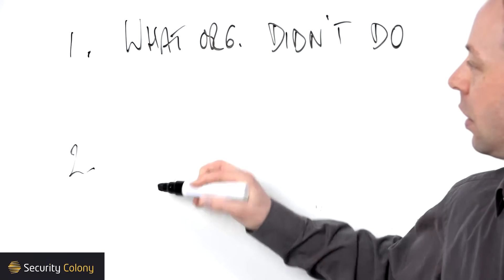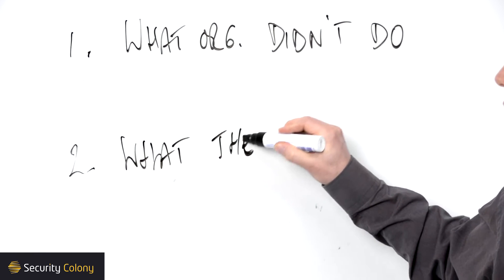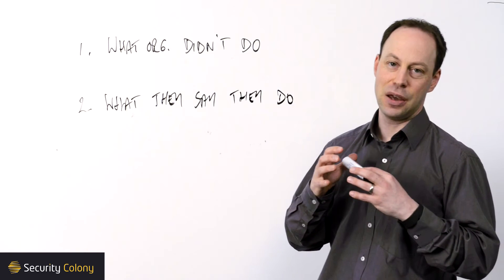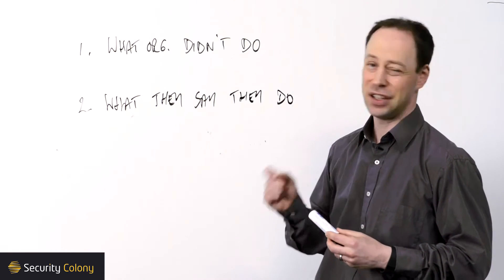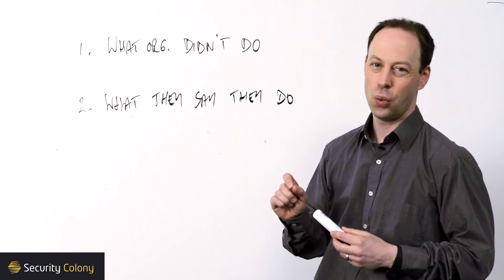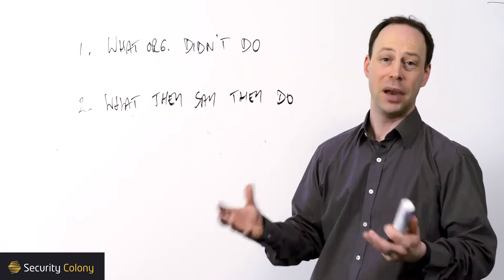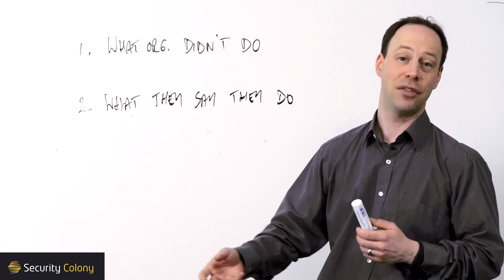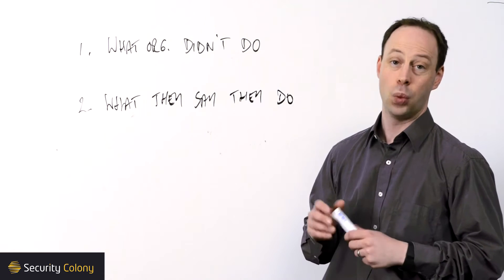The second is looking at what organizations say they do. The idea here is that if across the industry, every organization says that they have a particular control in place, whether or not that's actually entirely accurate, that perception of ubiquity of a particular type of control really means that it's hard to justify not having it. Or at least if you are going to not have that control, you're really going to need to be able to explain why that's the case.